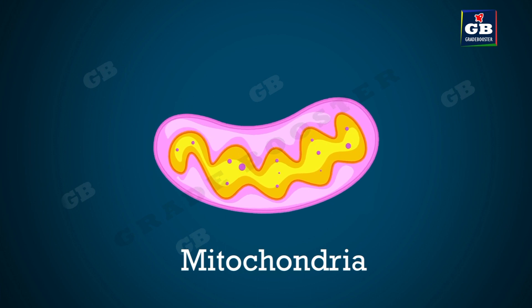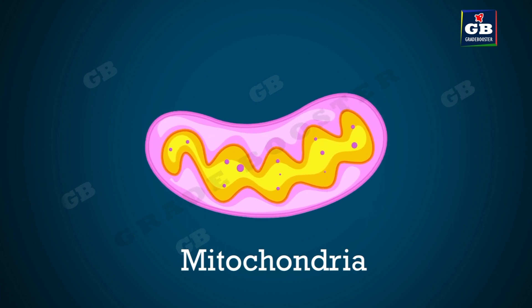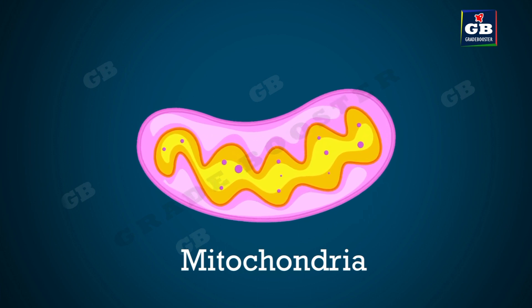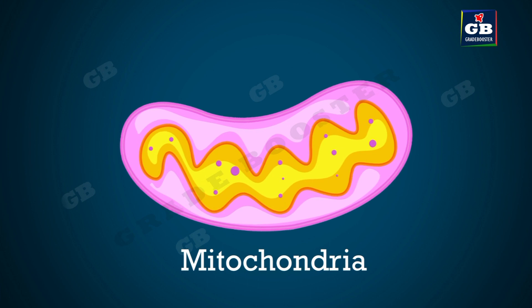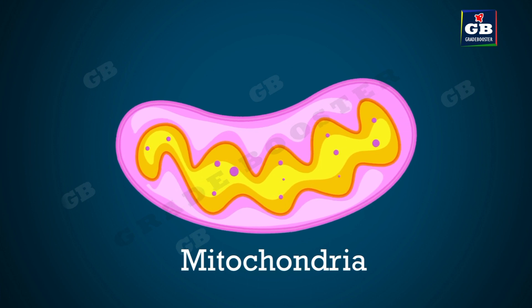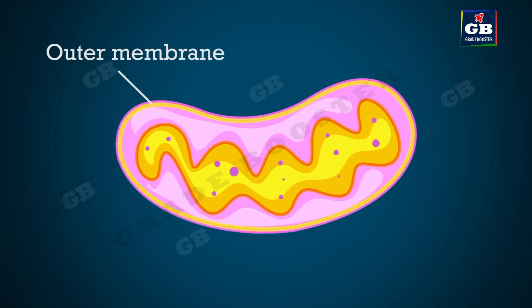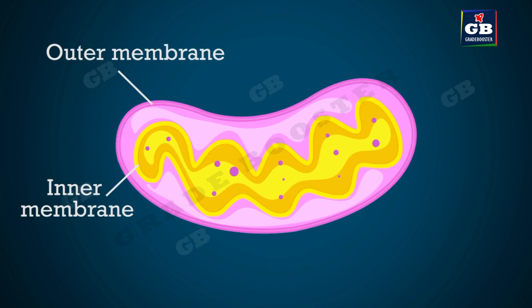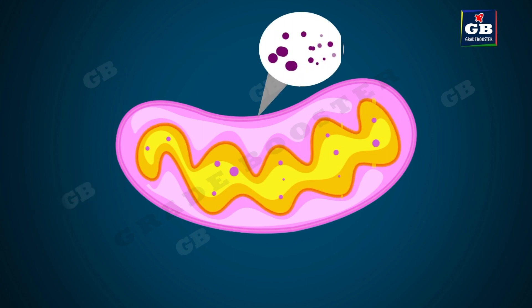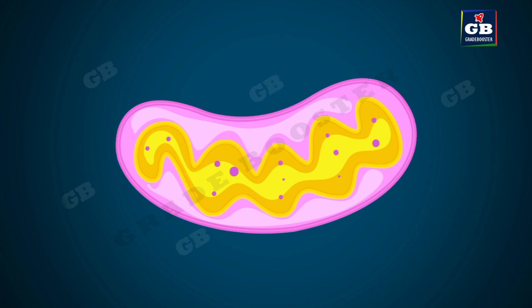Mitochondria are double-membraned organelles. Each mitochondria has two membranes — one outer membrane and one inner membrane. The outer membrane is porous, meaning it has pores. The inner membrane is deeply folded.